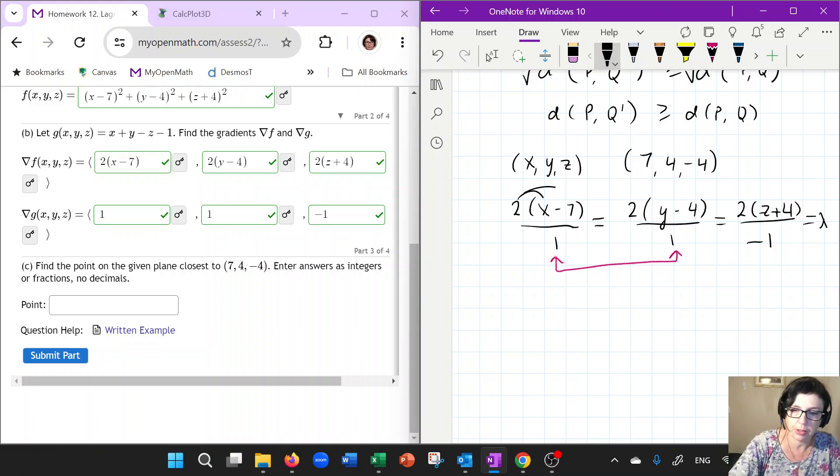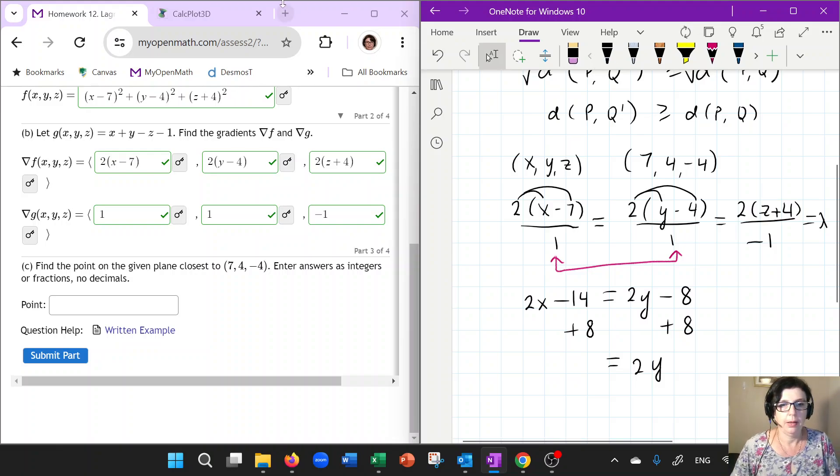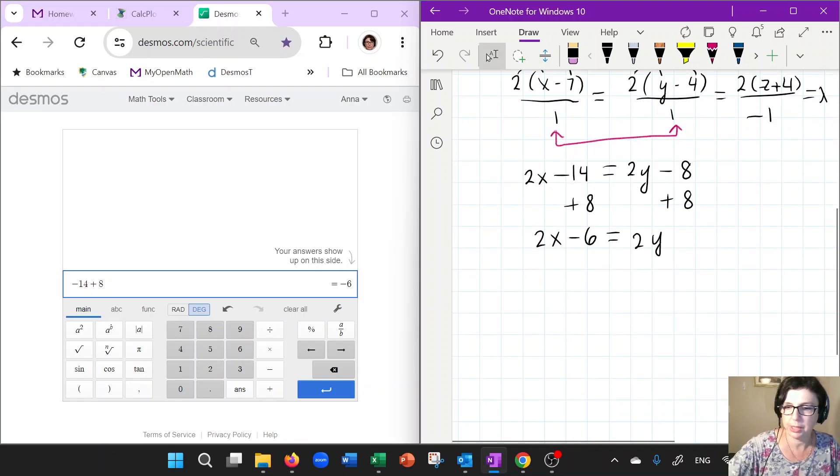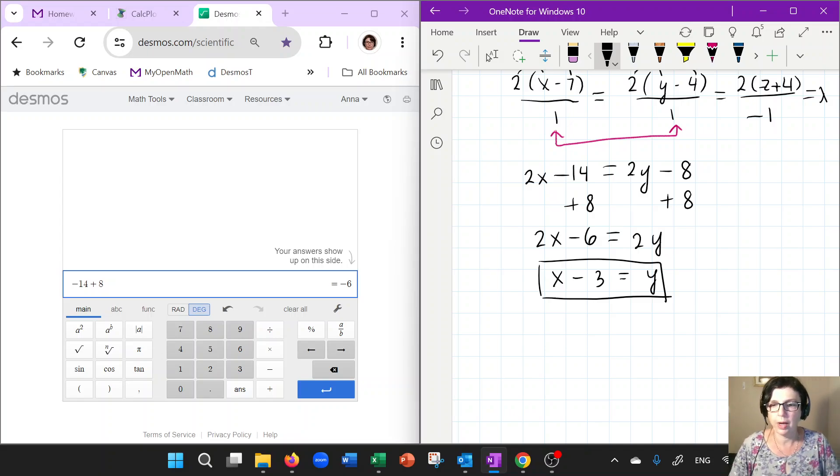So what I'm going to do is look at first at these two, the proportions, and try to express Y in terms of X. Now let's carefully distribute here. So I will get 2X subtract 14 equals, on the other side again, I'm going to distribute, so 2Y subtract 8. My next step is to add 8 to both sides. That'll give me 2Y equals, so what is negative 14 plus 8? I think that would be negative 6. And then let me divide both sides by 2. So that gives me X minus 3. So I think that's the connection between Y and X.